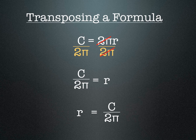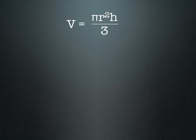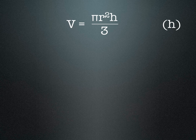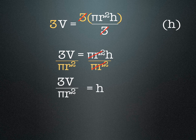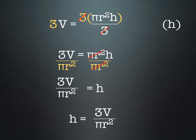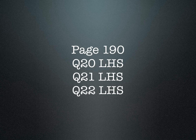Here's a more complicated example: the volume of a cone, where V equals pi times r squared times h divided by 3. If we want h as the subject, we first multiply both sides by 3 to cancel the division, giving 3V equals pi r squared times h. Then we divide both sides by pi r squared, which cancels on the right, leaving h equals 3V over pi r squared.